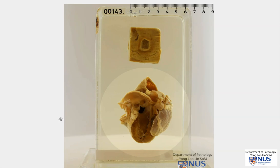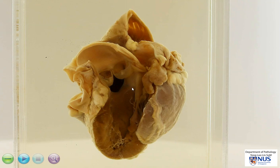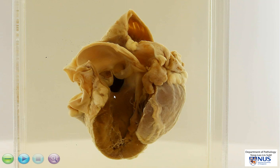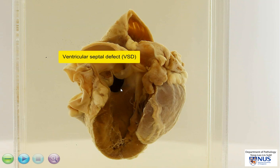So let's first orientate ourselves. We're looking here at the aorta, the aortic valve. This is the left ventricle that has been opened for you, and this is the left atrium. The pathology actually lies in the interventricular septum. This whole surface that we're looking at is the interventricular septum, and you can see here that there is a defect — a hole — which goes right into the right ventricle. So this is a ventricular septal defect.